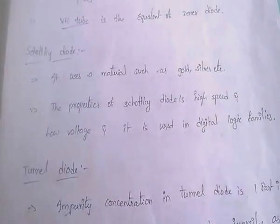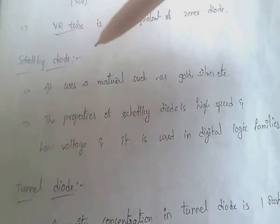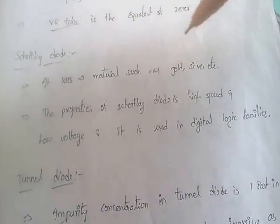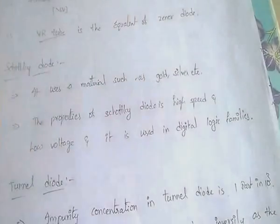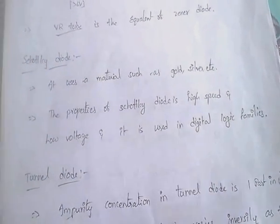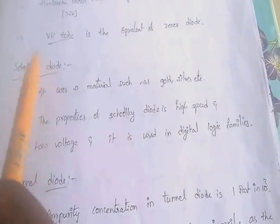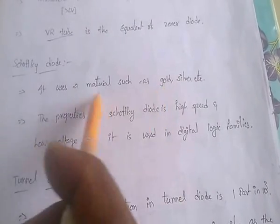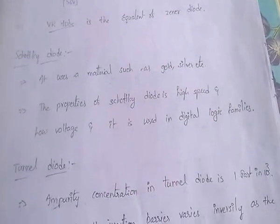The Schottky diode uses materials such as gold and silver. Properties of the Schottky diode include high speed and low voltage, and it is used in digital logic families. The material used — gold and silver — makes it very expensive, but it has very good properties like high speed and low voltage.